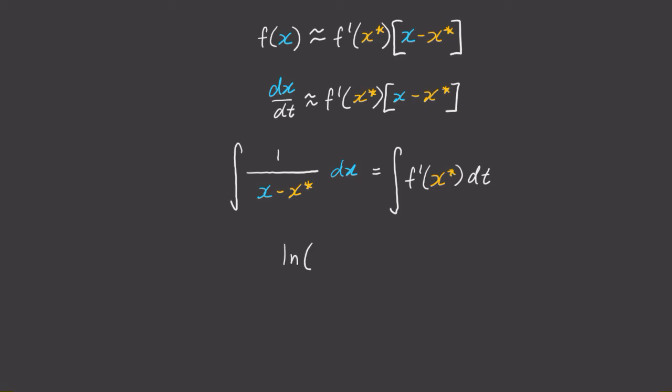When we do the integration on the left-hand side, we'll get the natural log of x minus x star. And on the right-hand side, f dash of x star is just a constant, right? Because it's your derivative evaluated at some known point. So we can take that out of the integral sign, and then get f dash of x star times t plus some integrational constant, which I'll call c.